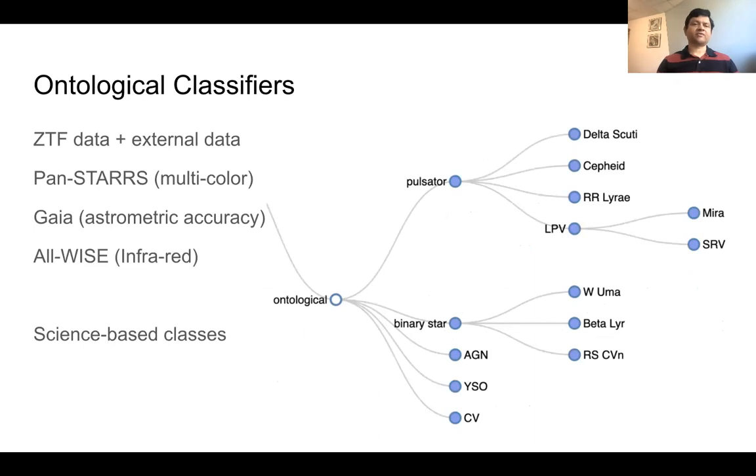Among the external data, we use Pan-STARRS, which have multi-color photometry, then we use Gaia, which have additional astrometric accuracy, and AllWISE, which have infrared data.